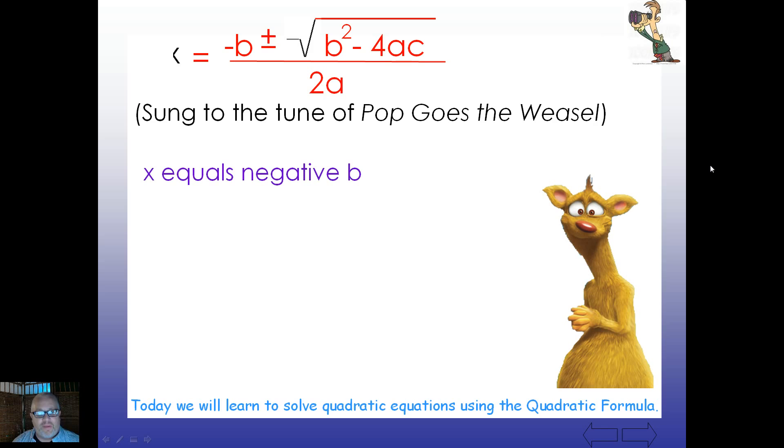X equals negative b, plus or minus the square root of b squared minus 4ac, all over 2a.